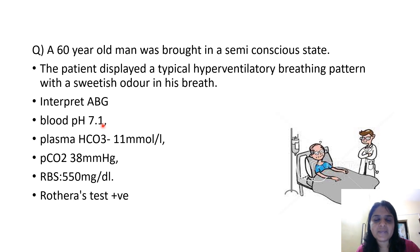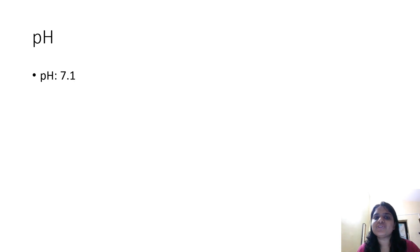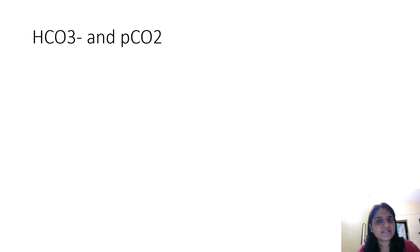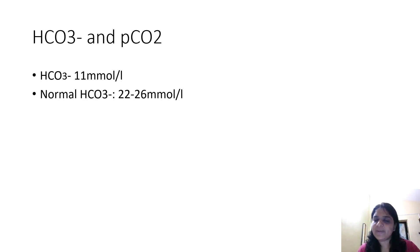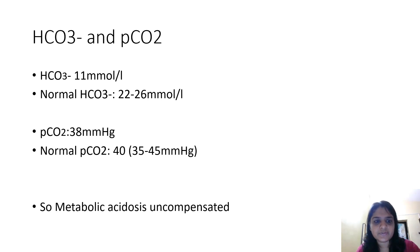To interpret the ABG, first check the pH, which is 7.1 — that means acidosis. Now we check whether it is respiratory or metabolic. PCO2 is 38, which is in the normal range. Plasma bicarbonate is 11 — bicarbonate is decreased — so it is metabolic acidosis. Normal bicarbonate ranges from 22 to 26 and normal PCO2 is 40, ranging from 35 to 45. Why is it uncompensated? If bicarbonate is decreased, PCO2 should also decrease. But here PCO2 is in the normal range (35 to 45), so it is uncompensated metabolic acidosis.